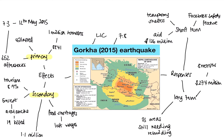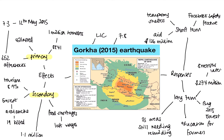Despite the delayed additional funding, there was investment in repairing infrastructure. Mount Everest opened again in August 2015, which is important since tourism makes up 8.9% of Nepal's GDP. Farmers were also given education to help overcome some of the secondary effects — they were able to repair damage from landslides and look after their crops to get something from the harvest.